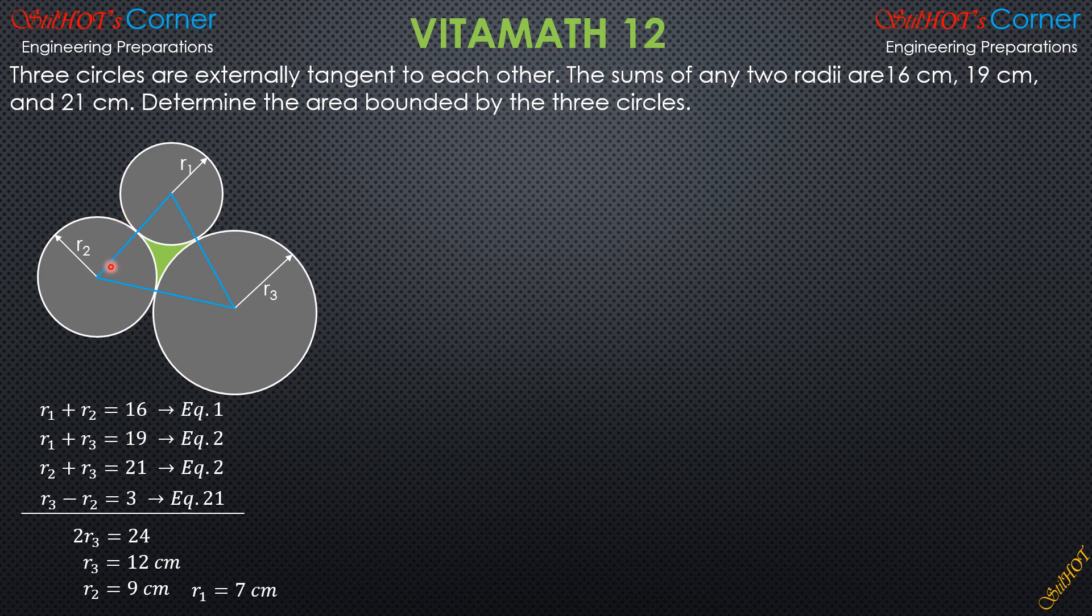Then in this triangle, applying cosine law—let's put the radius so that we can analyze the sides of the triangle. This is the longest side, 21. Therefore, I'll compute for theta 1. Call this theta 2, this one theta 3. So let's solve for theta 1 by cosine law.